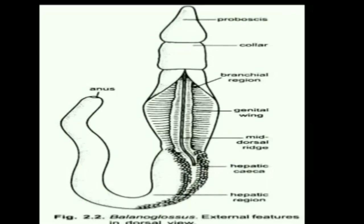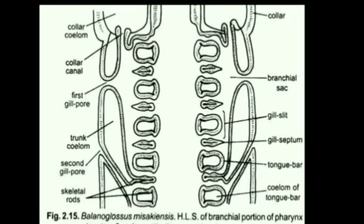The trunk contains a branchiogenital region, and the anterior part of the branchiogenital region is called the branchial region. It contains gill pores or gill apertures which are seen in the mid-dorsal line. The branchial region carries gill pores that help in respiration.